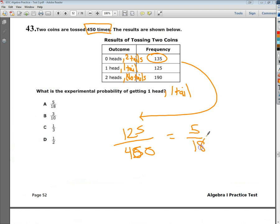So 5 over 18. So my answer to number 43, possibly one of the worst worded questions of all time, is A.